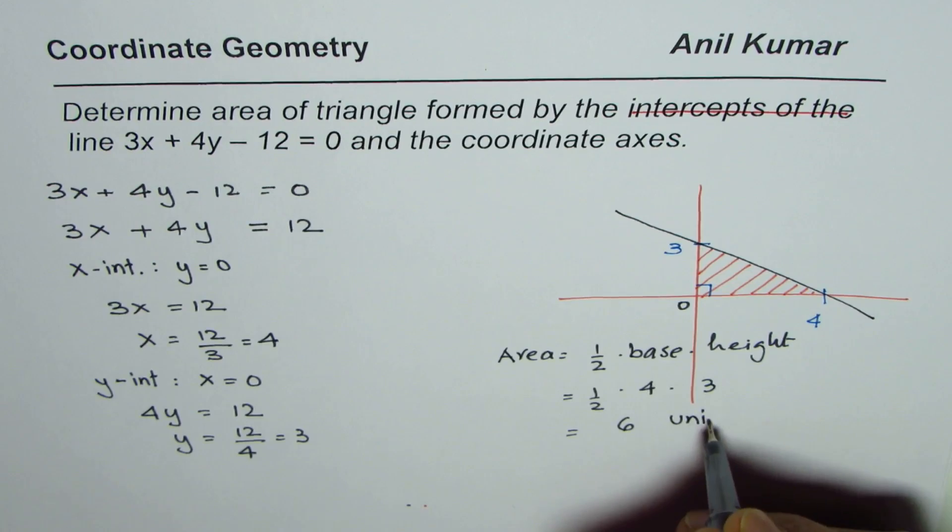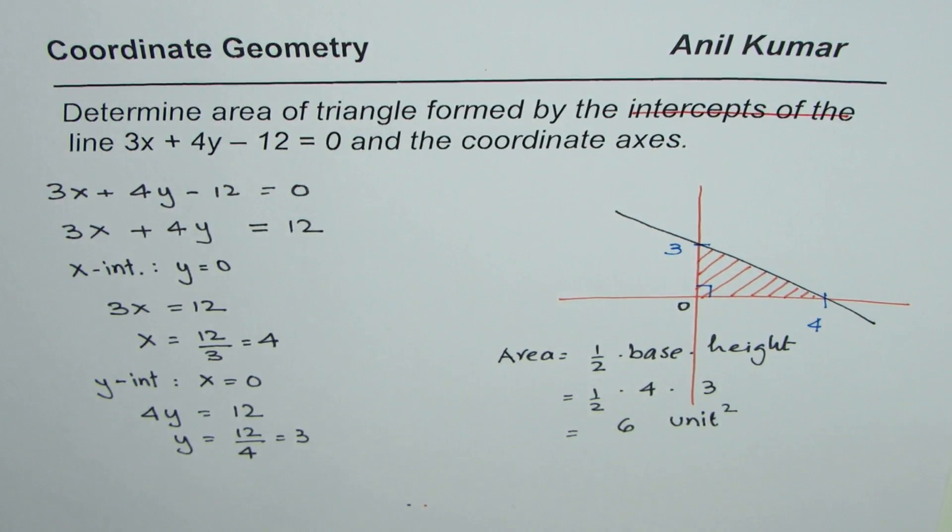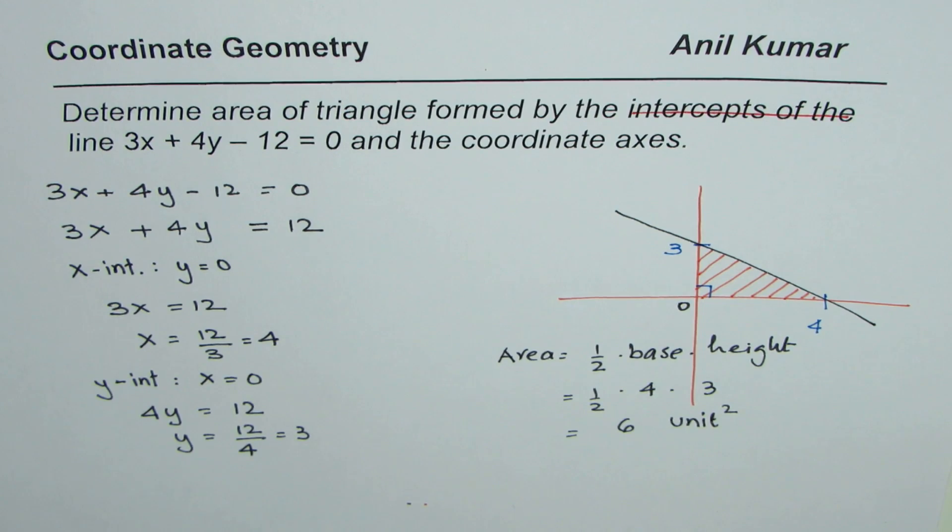Of course area will be in unit squares. So that is the area of the triangle formed by the line and the coordinate axes. I hope you understand what we're trying to do here.